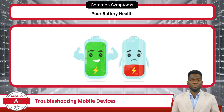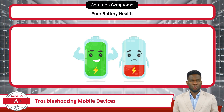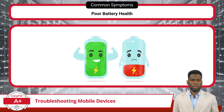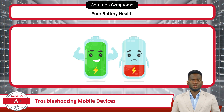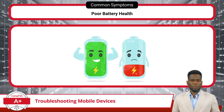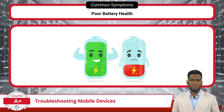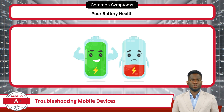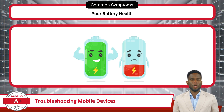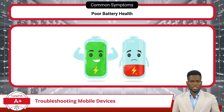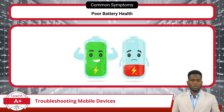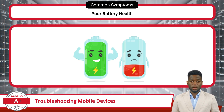Poor battery health poses a significant concern for mobile device users. One common cause is prolonged usage, where the battery undergoes extensive cycles of charging and discharging, leading to degradation over time. As batteries age, they naturally lose their capacity to hold a charge effectively, resulting in decreased overall battery life and performance. Improper charging can also accelerate a battery's decline. When a device feels hot to the touch or fails to retain a charge, it indicates a serious decline in battery health.